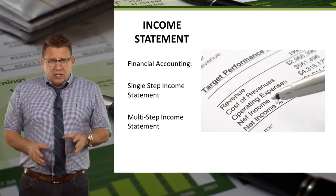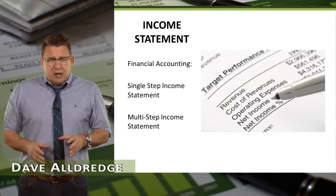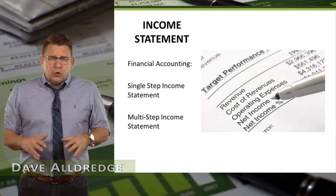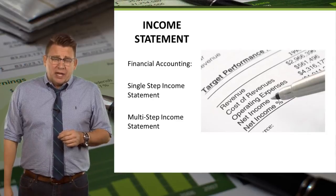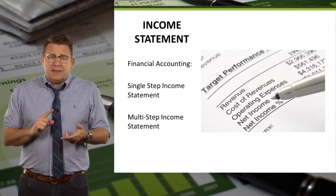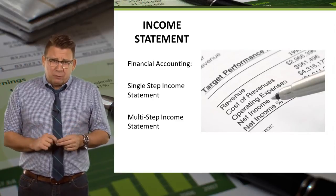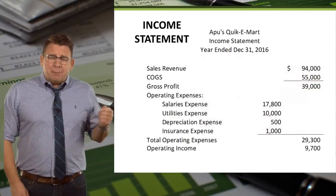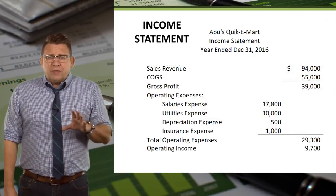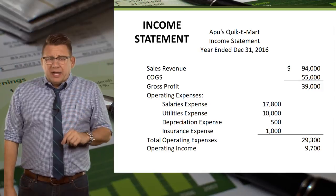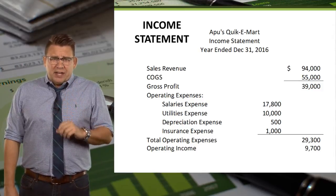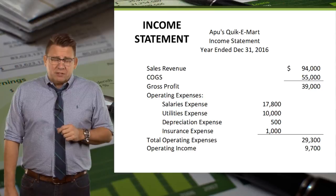You learned in financial accounting about the income statement. There are two approved ways of reporting income to external users: the single step format and the multi-step format. Here is an example of the multi-step format. Note the operating income of $9,700. We will refer to that again at the end of this video.